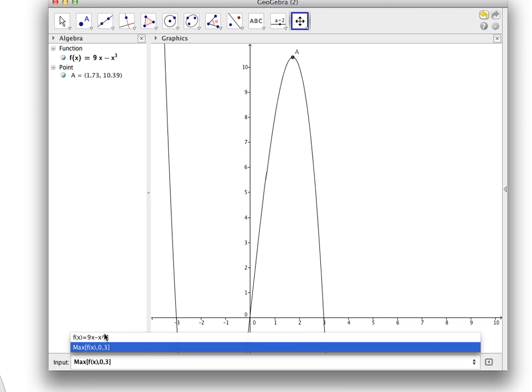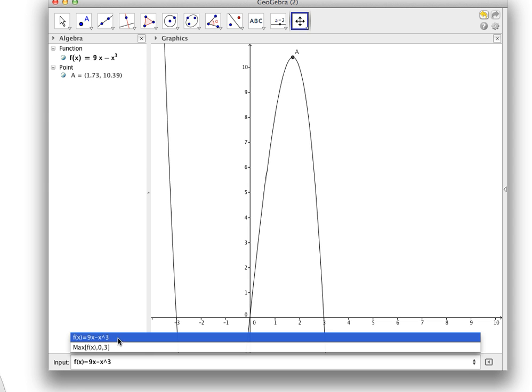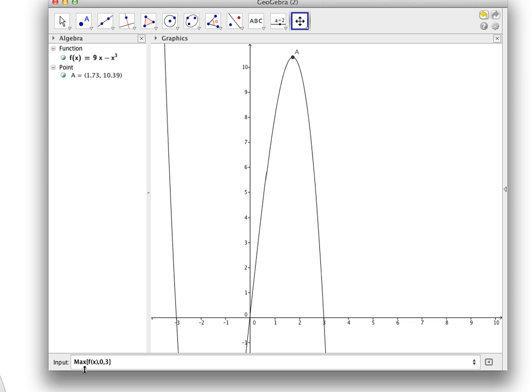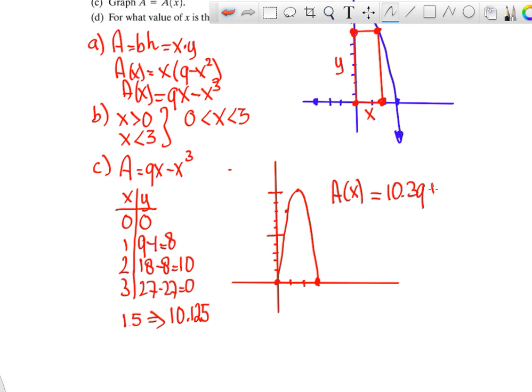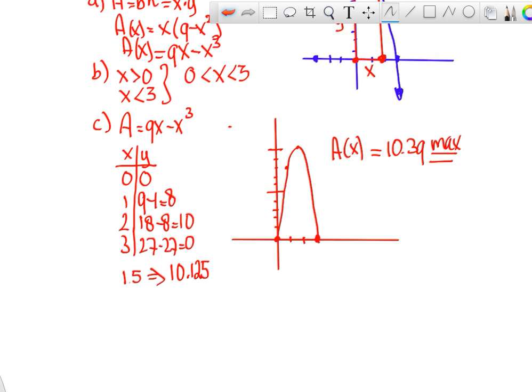So if you're wondering how I did that. So here is the function, 9x minus x cubed. And then I told it to find the maximum for f of x between 0 and 3. And so that point here, 1.73, is a pretty good approximation of what it is. So let's see, 10.39, I think, was the highest that we got. So 10.39 is the maximum area based on using some technology.